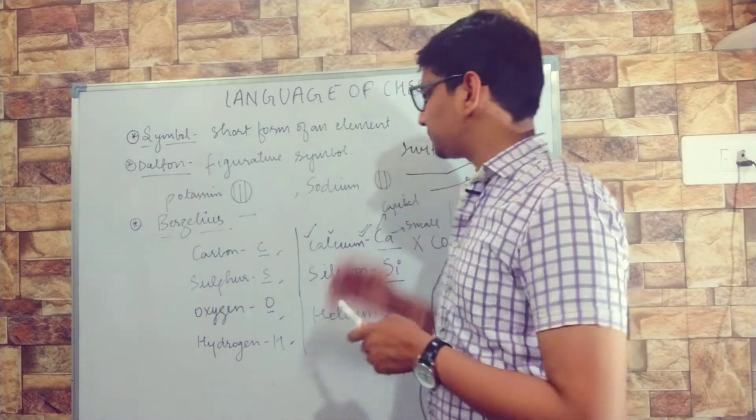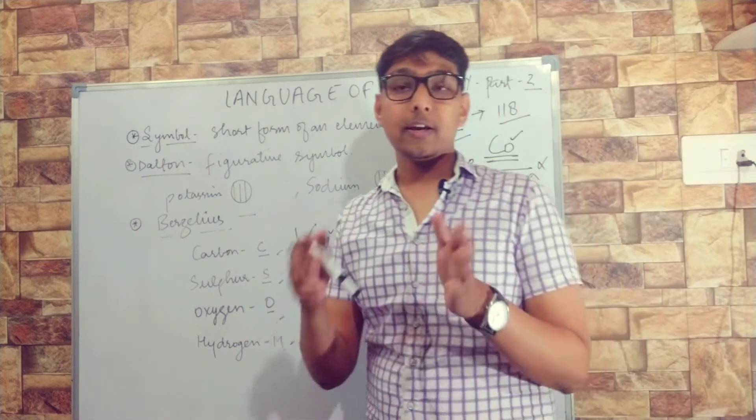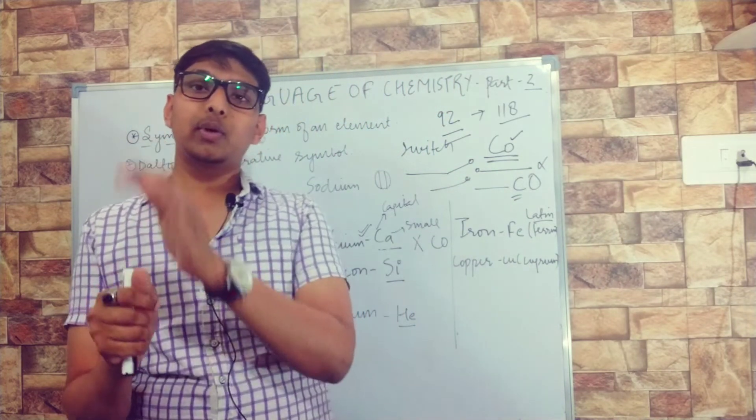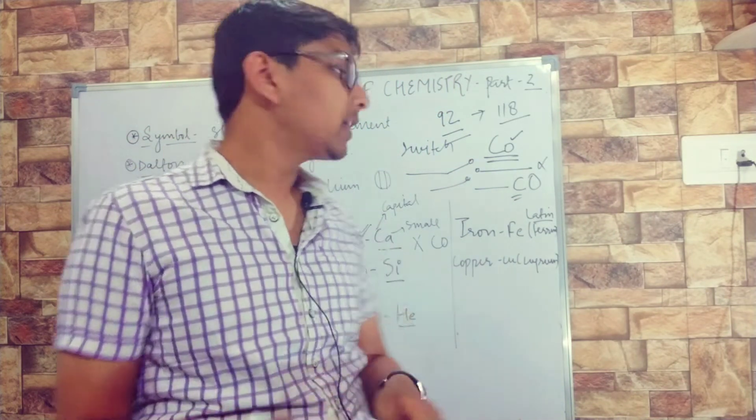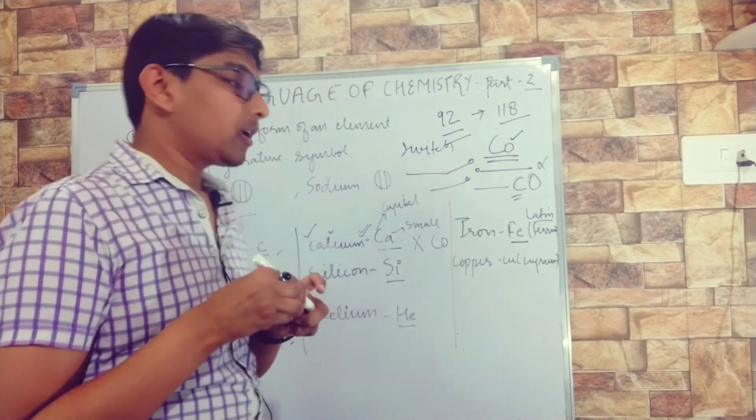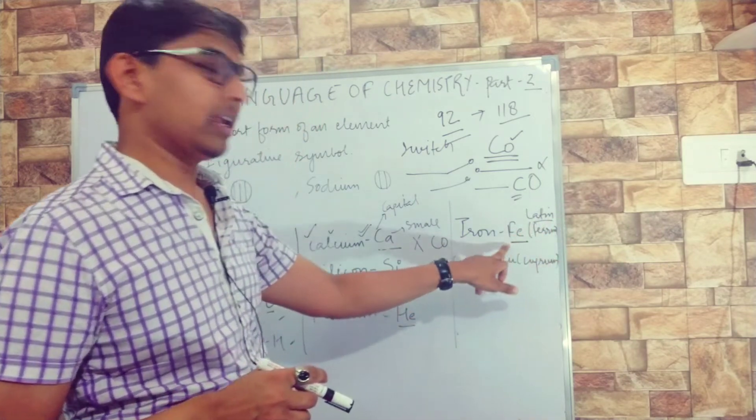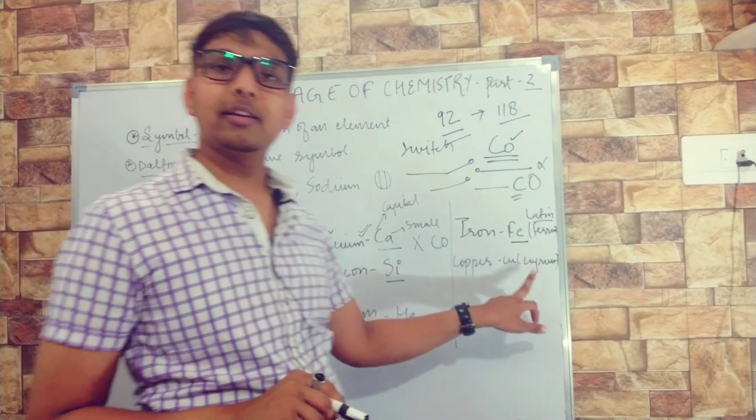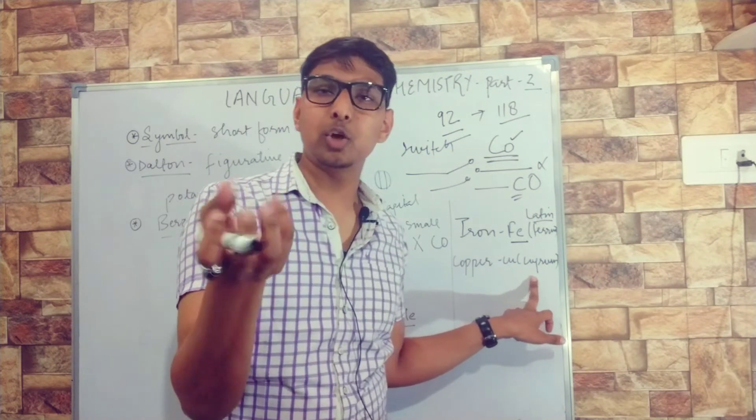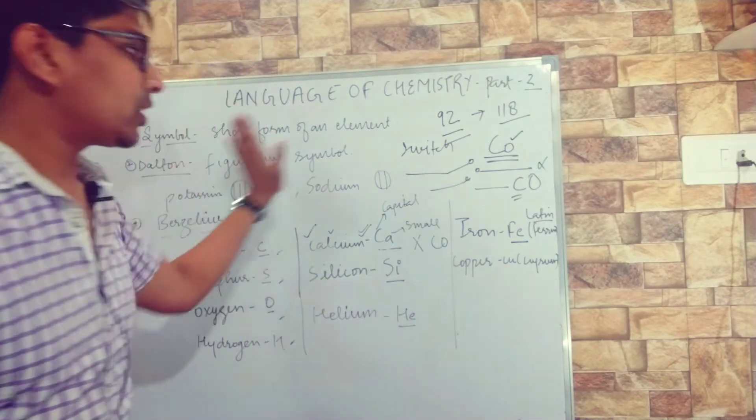Some elements use other letters. For example, iron - we write its symbol as Fe because iron's Latin name is ferrum, so we use the first two letters. Copper's Latin name is cuprum. These are different ways of writing symbols.